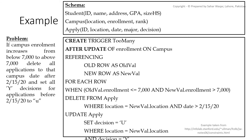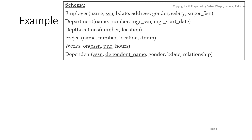In the next example, the problem is: if campus enrollment increases from below 7000 to above 7000, we must delete all applicants to that campus submitted after February 15, 2020, and set all 'Y' decisions for applications before that date to 'U'. Since this is an update event on the Campus table, we need old and new tuples. It is a row-level trigger. The WHEN condition checks if the old enrollment was at or below 7000 and the update causes it to exceed 7000, then we delete and update the Apply table accordingly.